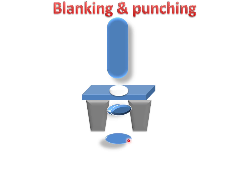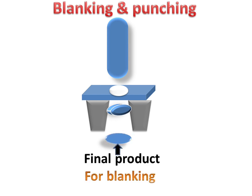The final part for blanking is that which is produced by the punch hammering. When the tool strikes on the plate there will be a cut part, and this cut part is the blanking final product. The remaining plate is the raw material.